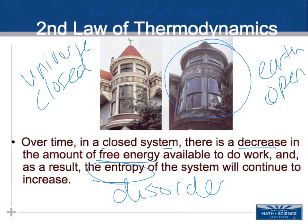Earth exchanges energy with the sun and receives an input of energy. So even though entropy is increasing and disorder is increasing, there is an influx of energy available, and we hopefully are not going to exhaust our supply of free energy anytime soon.